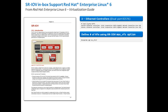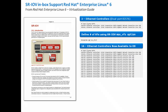Here I'm going to load the driver with 7 virtual functions per port, and what we'll end up with is 16 Ethernet controllers now available to the hypervisor. We have those 2 main ports that we saw in the beginning, and then 14 virtual functions — 14 because there are 2 ports and I enabled 7 virtual functions per port. All the documentation says you can blacklist those and assign them directly to your virtual machines for that hypervisor bypass functionality.